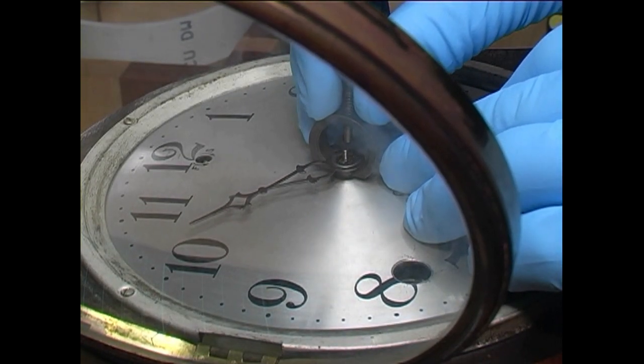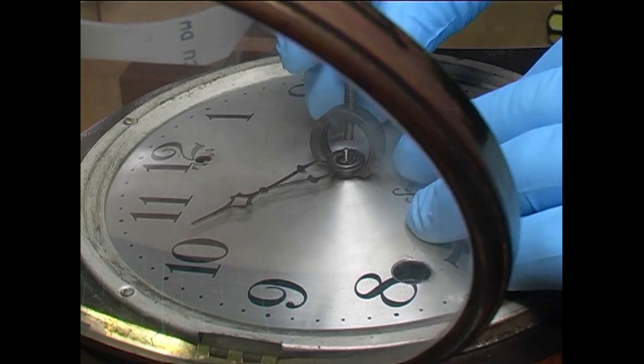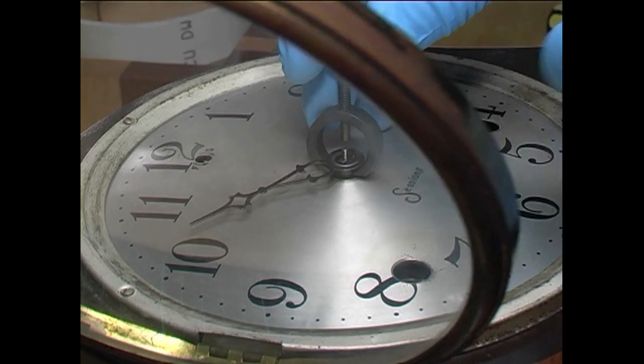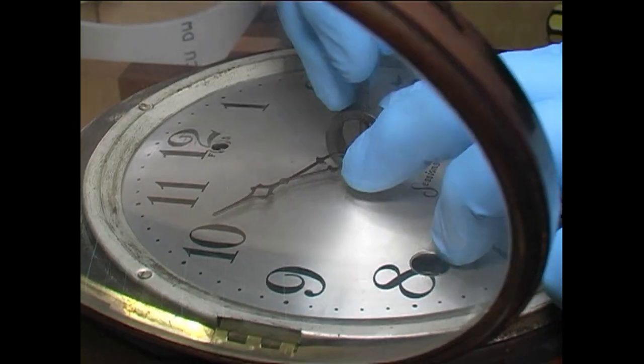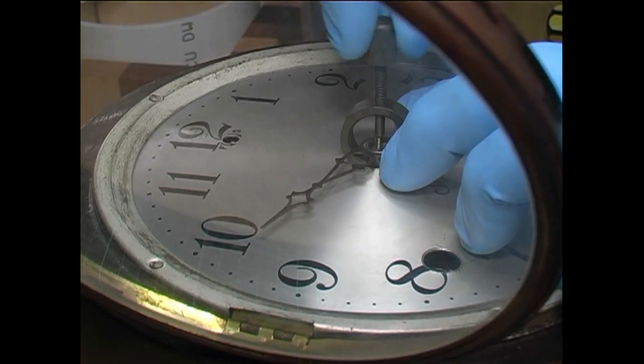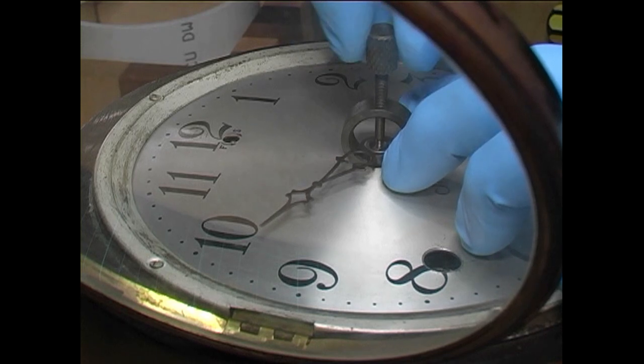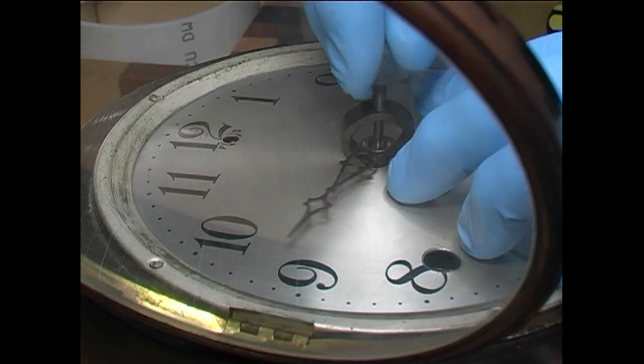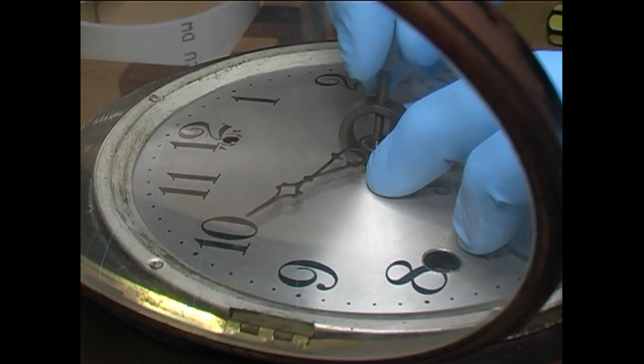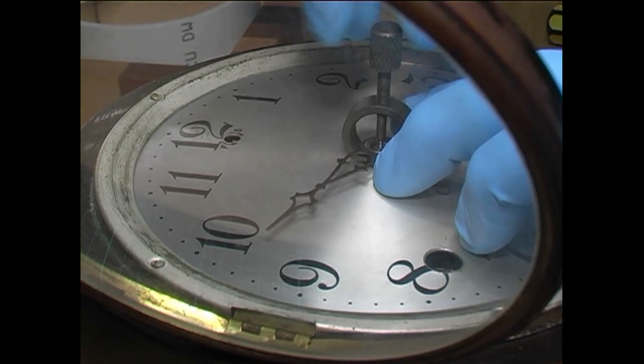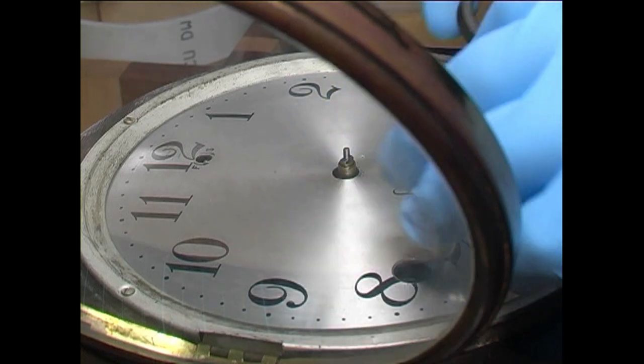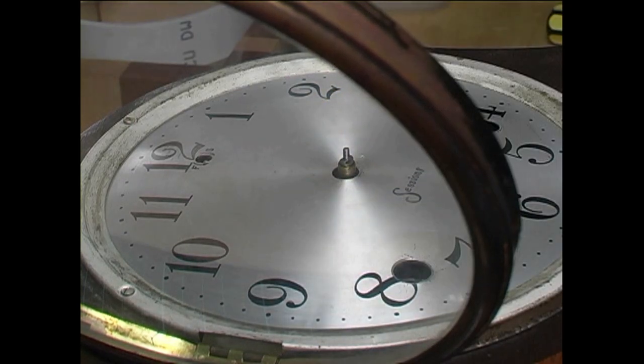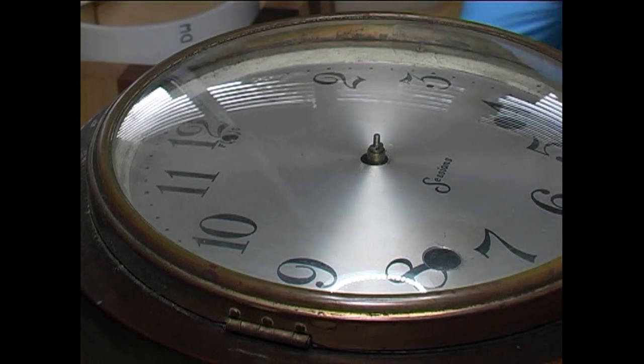Once again, being careful of the dial. Line it up under the hands and then wind the screw down. And as we wind it down, it lifts the hand off. No damage to the face. Now we'll take the movement out.